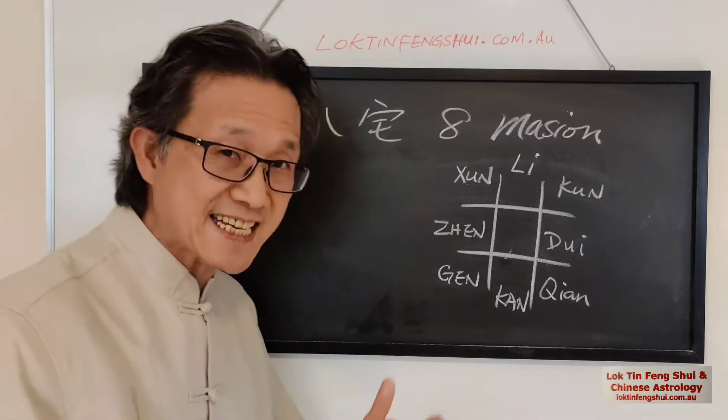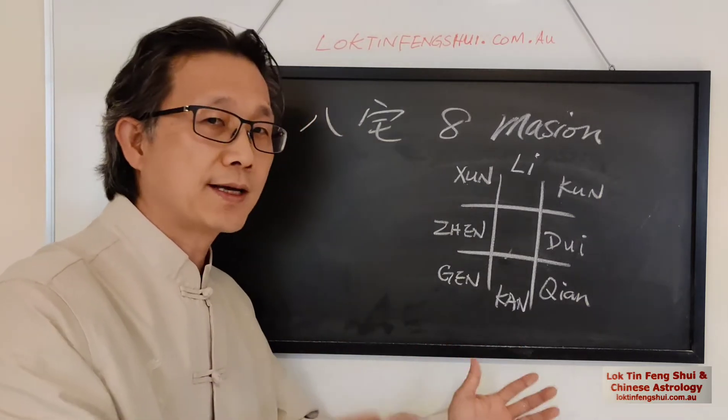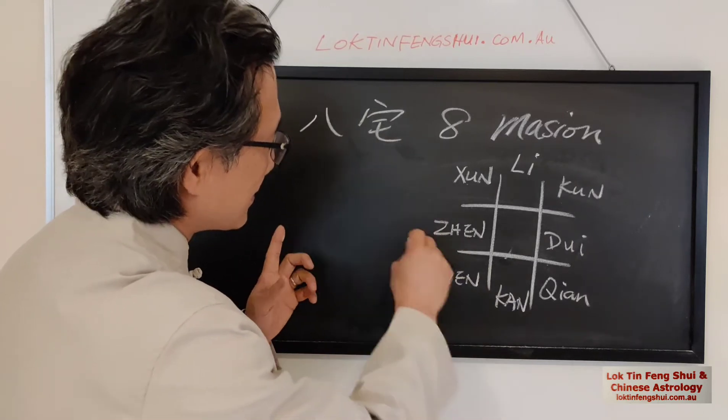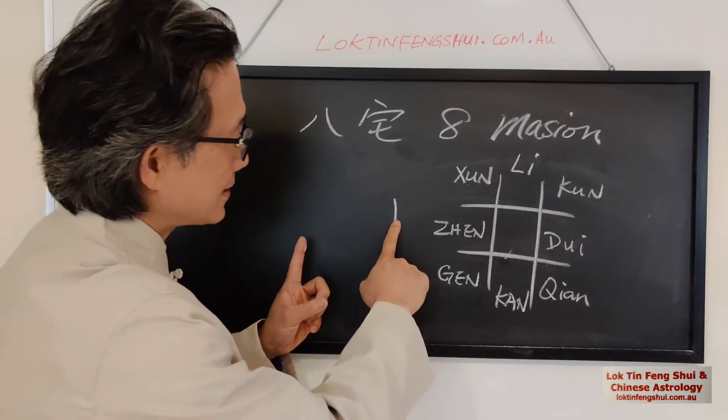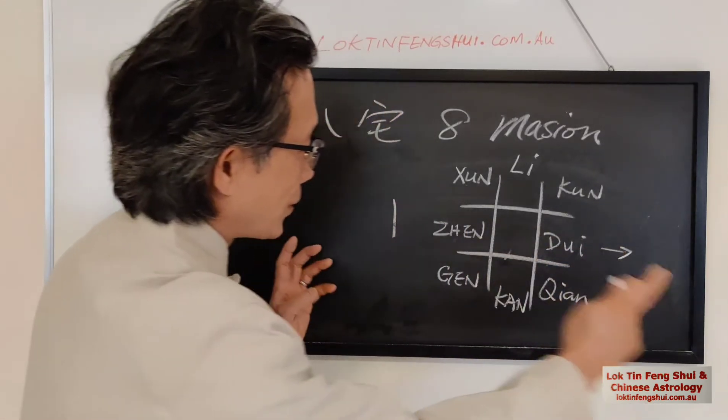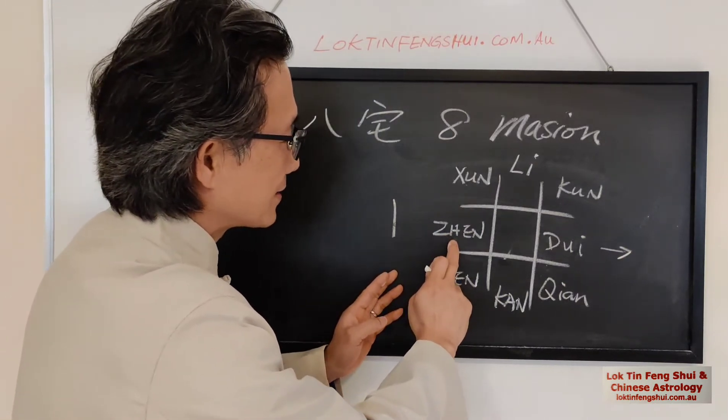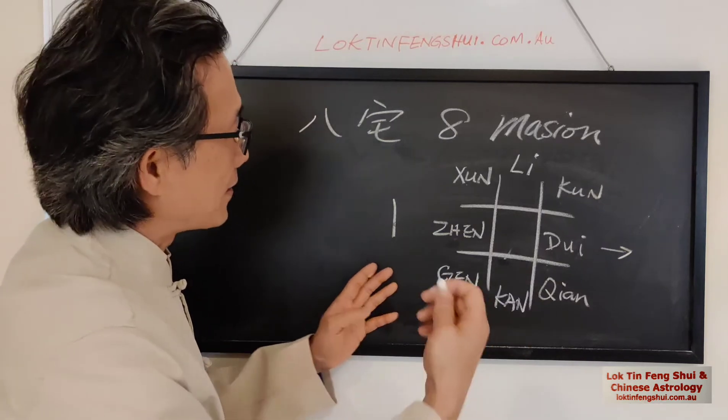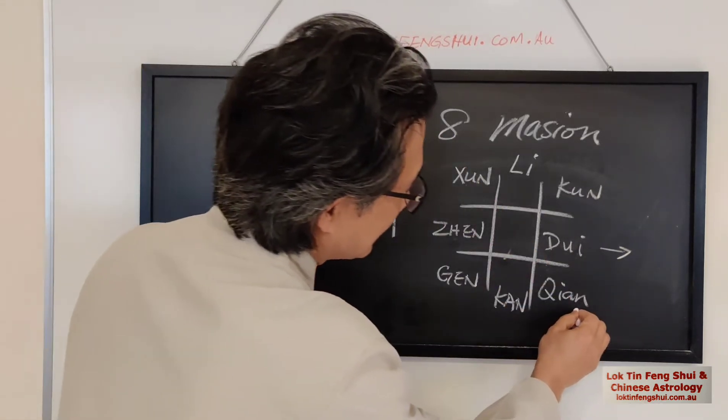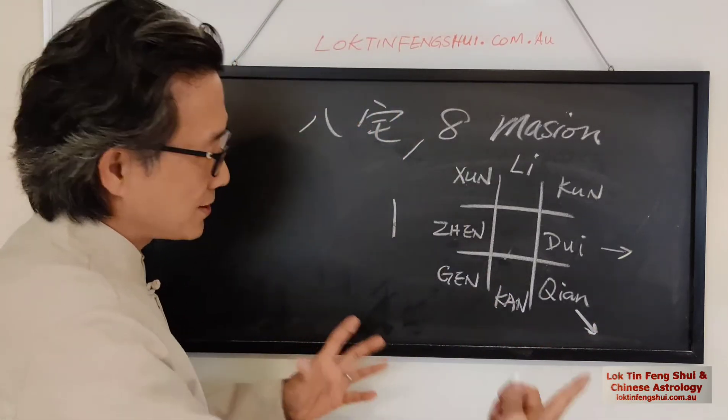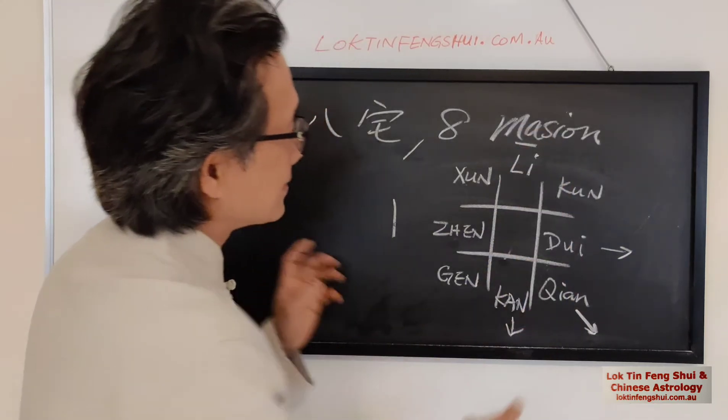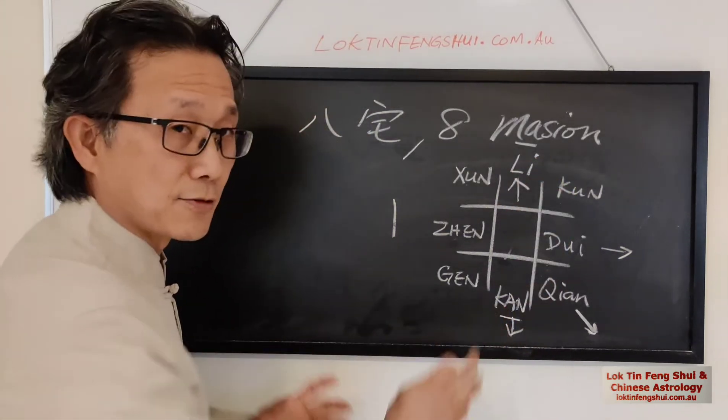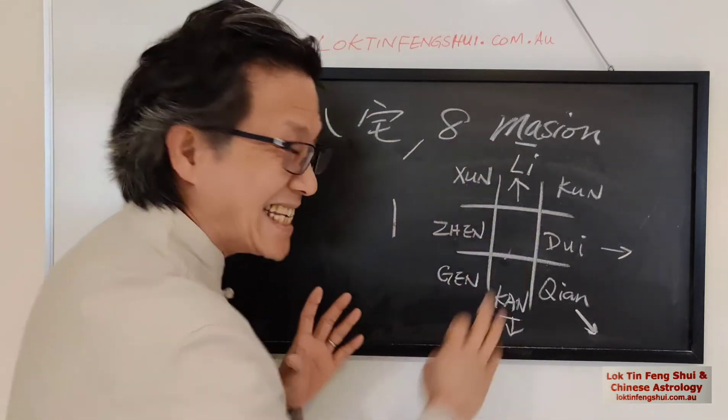So it depends on the sitting direction. We call it like an east group and a west group. So there is, let's say, in this direction, sitting. This is a sitting, like we do this sign, sitting. Sitting Zhen, facing Dui. We use the sitting. That's called Zhen House, or Zhen Zhai. If it's sitting Xun, facing Qian, it's called a Xun House or Xun Zhai. If it's sitting Li, facing Kan, it's called a Li House. On the other hand, if it's sitting Kan and facing Li, that is called a Kan House. So this is four, they call it east group.